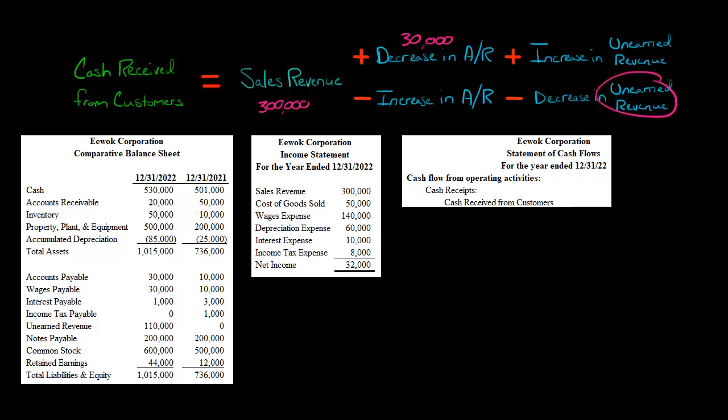Now let's see, did the company have any unearned revenue? That's a liability, so we look down and we see unearned revenue. They went from zero, they didn't have any unearned revenue, to $110,000. So it increased. They had an increase in unearned revenue of $110,000. So what do we have here? We have $300,000 in sales revenue plus the decrease in accounts receivable of $30,000 plus the $110,000 increase in unearned revenue.